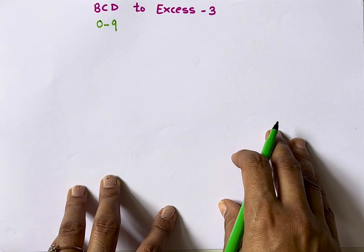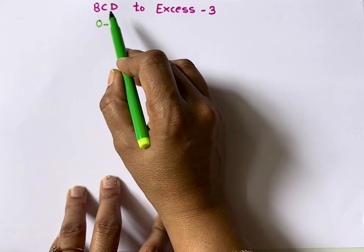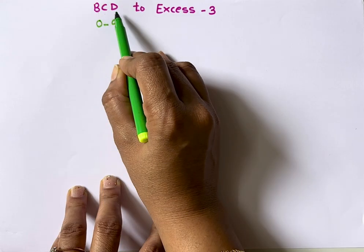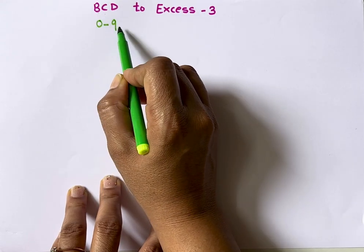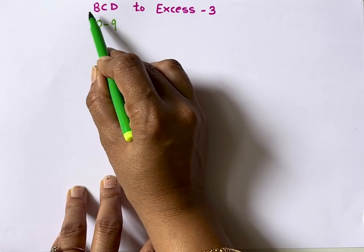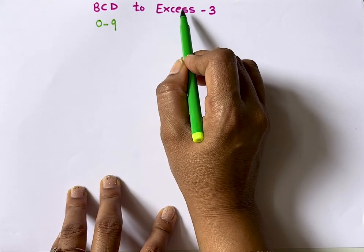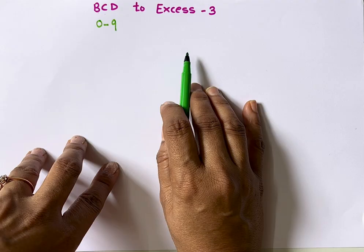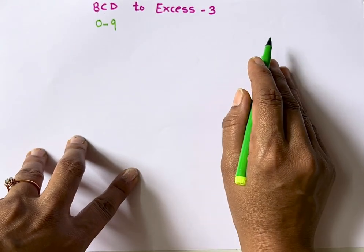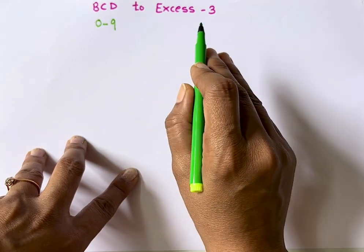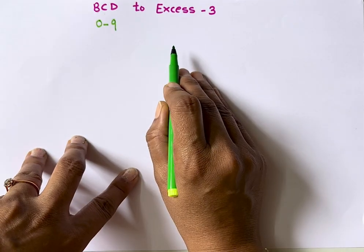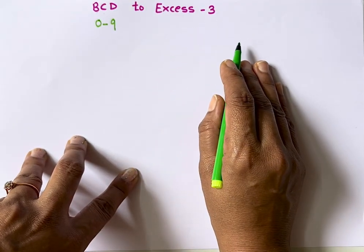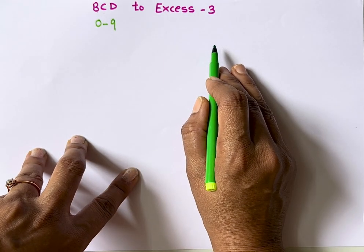Hello everyone, welcome to my channel. You are learning with Dr. Shobhanikam. In this video I'll tell you how to convert BCD numbers into XS3 numbers. BCD stands for Binary Coded Decimal — they are base-10 numbers from 0 to 9, but written using binary representation. Both BCD and XS3 use binary representation, and they are widely used for encoding decimal numbers in computing and digital electronics.